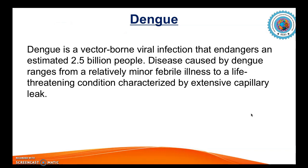As an example of a disease detected by biosensors, I will discuss dengue, which I have been working on for a long time. Dengue is a vector-borne viral infection that endangers an estimated 2.5 billion people worldwide, especially in tropical and subtropical countries. The disease ranges from a relatively minor febrile illness to a life-threatening condition characterized by extensive capillary leak. There are several forms: normal dengue fever with increased body temperature and body aches, dengue with warning signs including low platelet count, petechiae, red eyes, and arthralgia, and severe dengue with severe hemorrhage and vascular permeability leading to hospitalization.